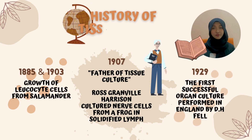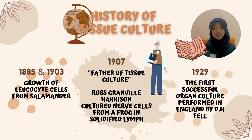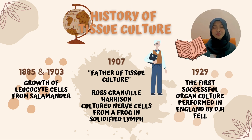For almost 50 years, no changes or new discoveries were made. But in 1885, a researcher observed the growth of leukocyte cells from salamander in an artificial environment, and in 1903 another researcher had done the same. Then in 1907, the father of tissue culture was identified — Ross Granville Harrison, an American zoologist, who was able to culture nerve cells from a frog in solidified lymph. From this breakthrough, Harrison earned the title of father of tissue culture.